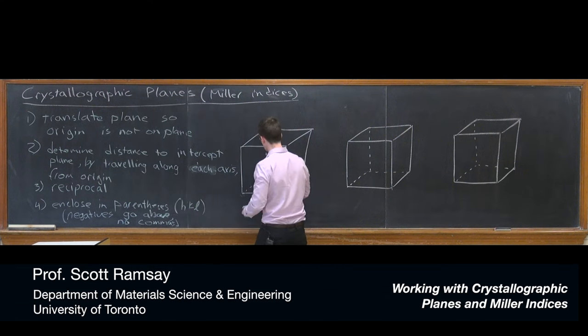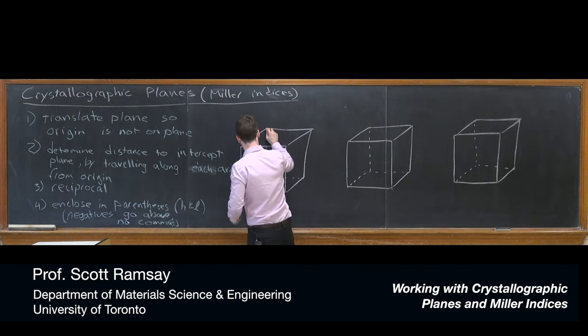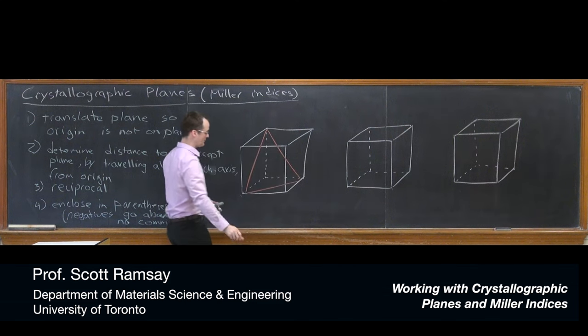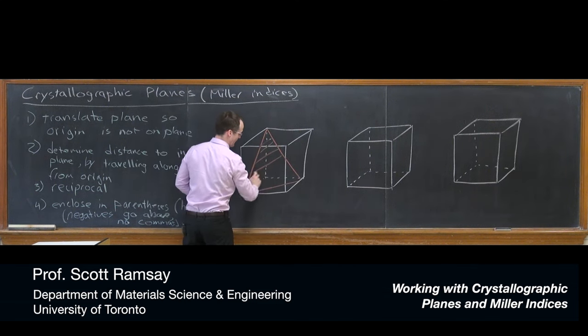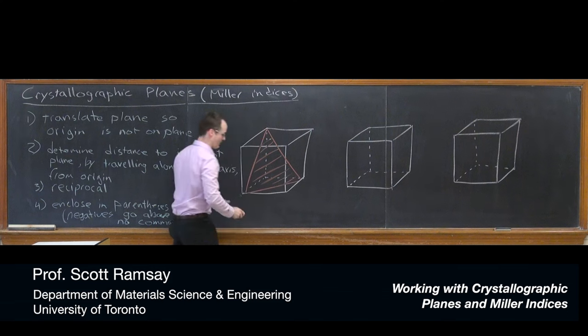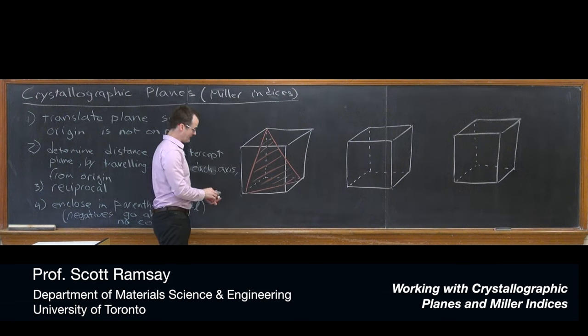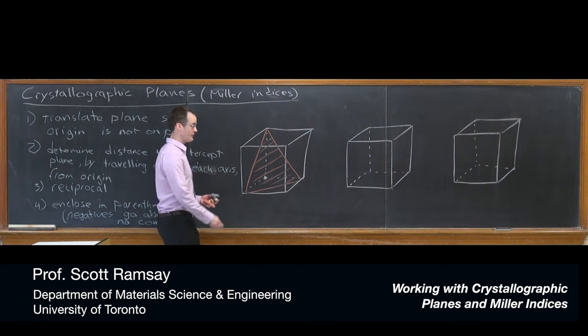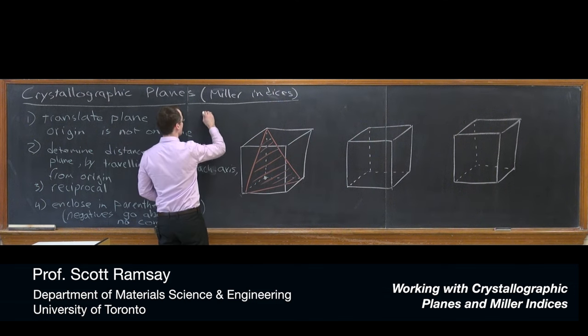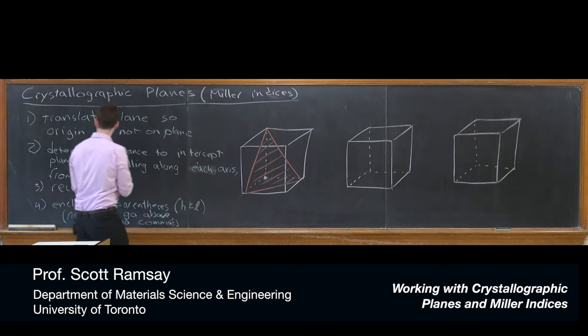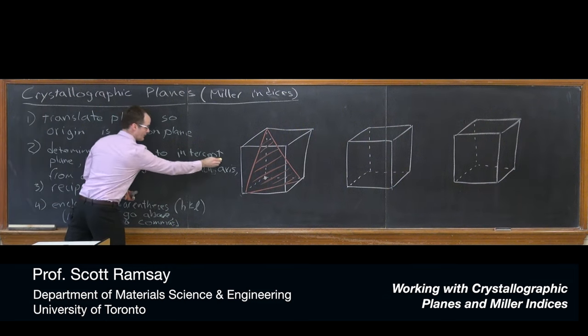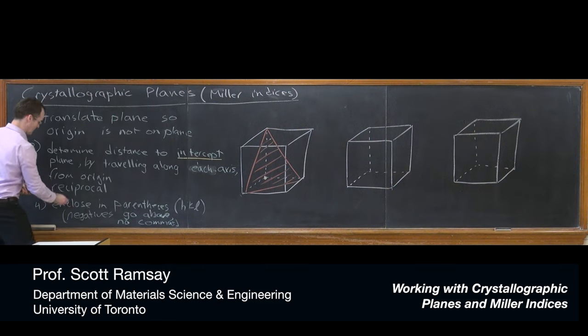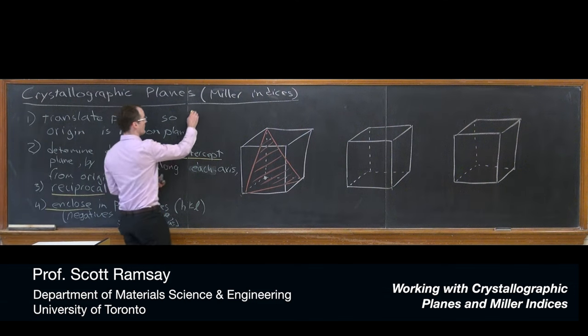Let's take a look at my all-time favorite plane. This plane here cuts off the back, bottom, left corner of the cube. We can start with this conventional origin. I'm going to proceed through in the same order: I'm going to determine the intercept, take the reciprocal, and then enclose.